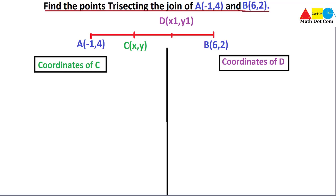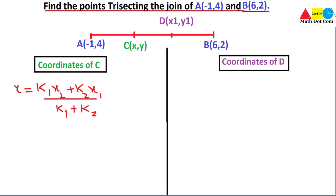The formula is: x equals k1·x2 plus k2·x1, divided by k1 plus k2. This is the formula used for finding the x-coordinate of a point C or D. Similarly, for the y-coordinate: y equals k1·y2 plus k2·y1, divided by k1 plus k2.